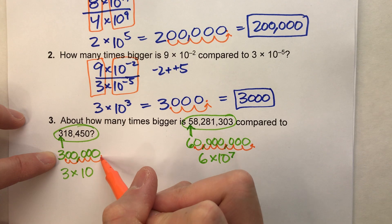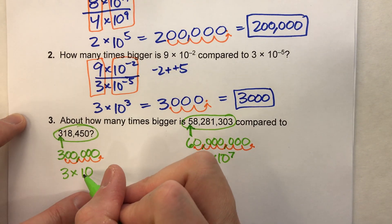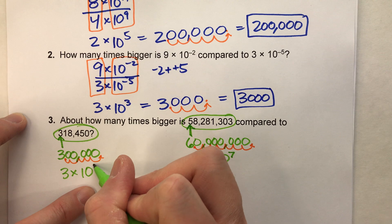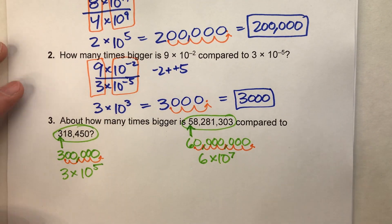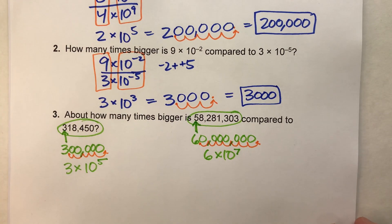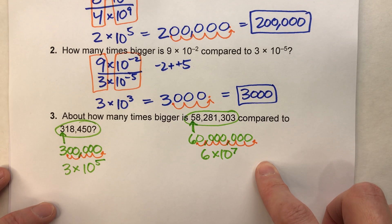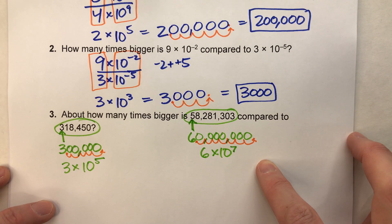Or in other words, multiply it by 10 to the fifth power. And again, if you're having trouble doing these, I'll put a link to the video on how to do these down below.